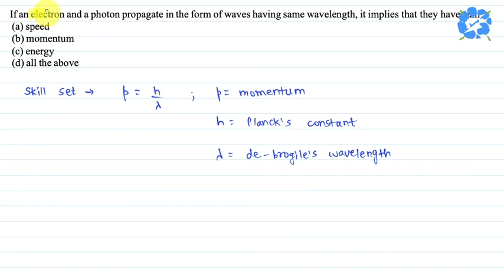The question says that if an electron and a photon propagate in the form of waves having same wavelength, it implies that they have same: A speed, B momentum, C energy, D all of the above.